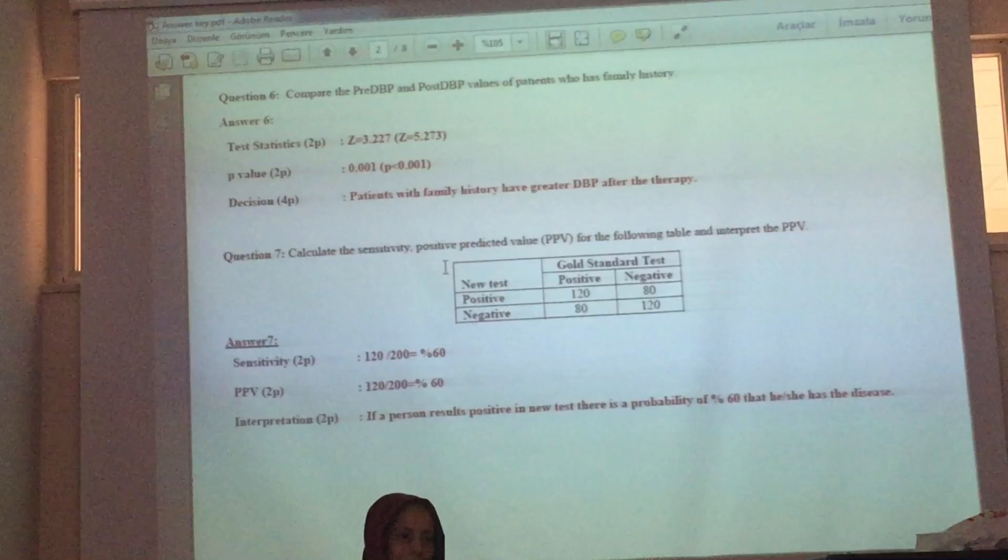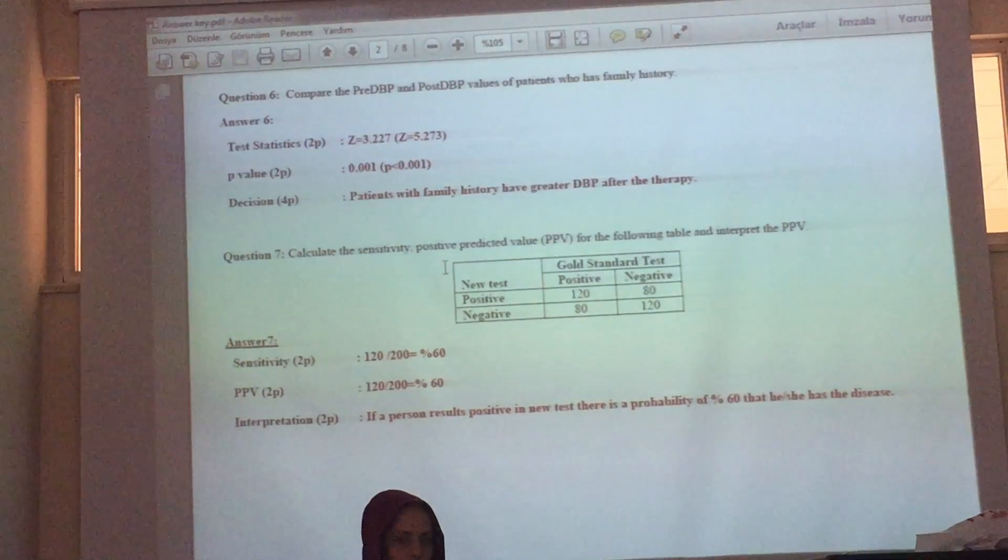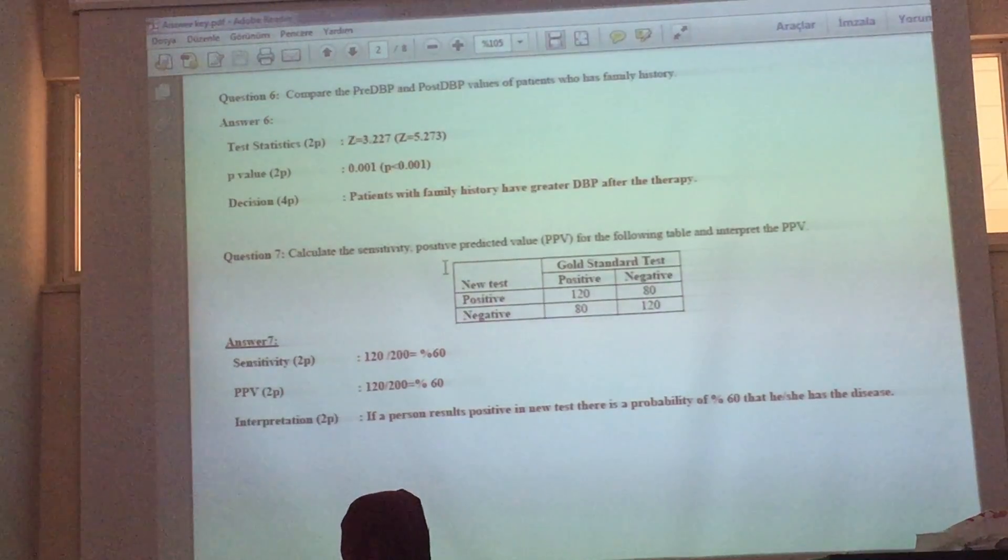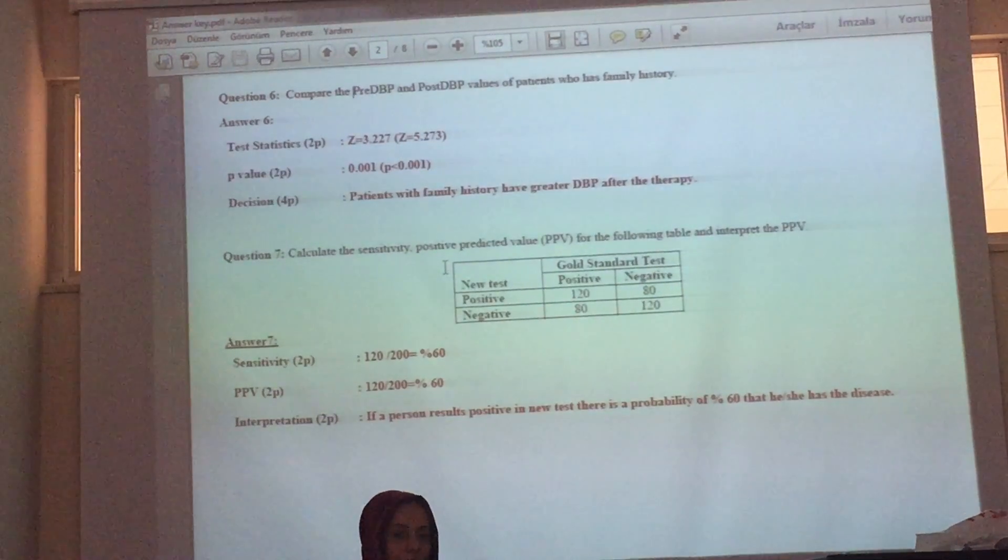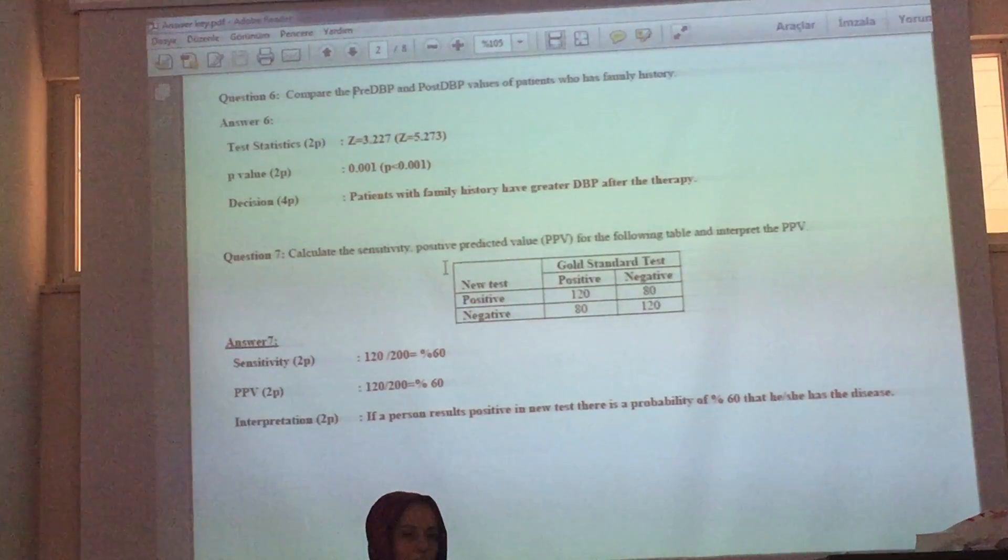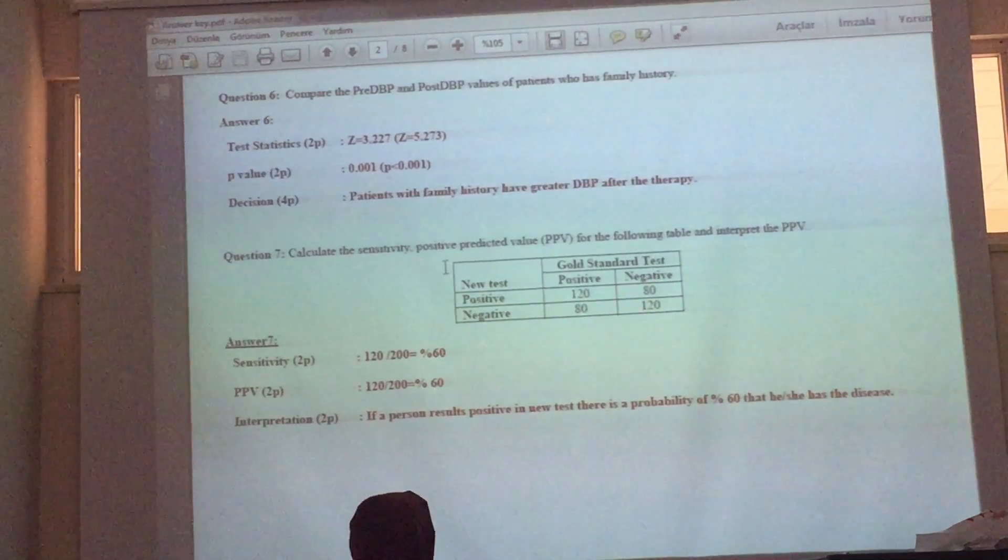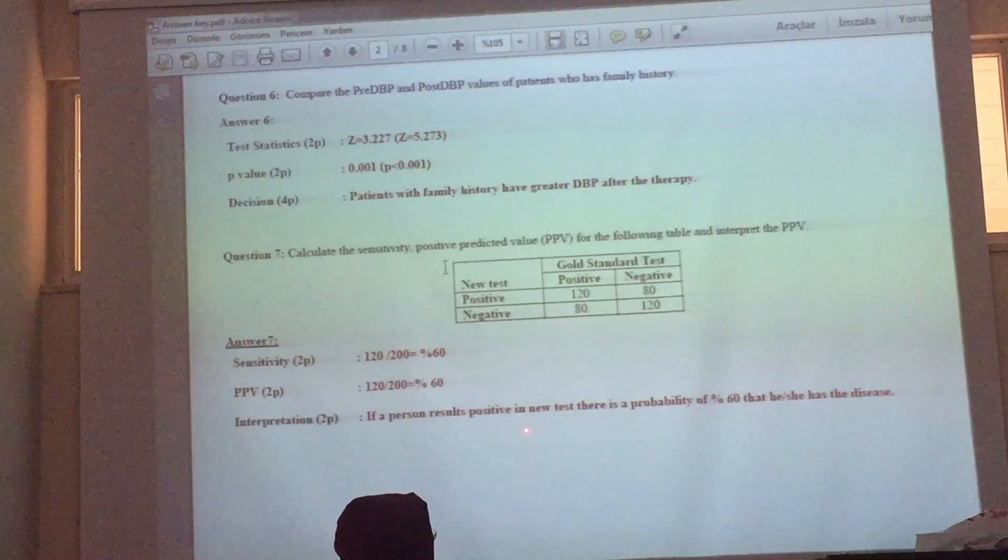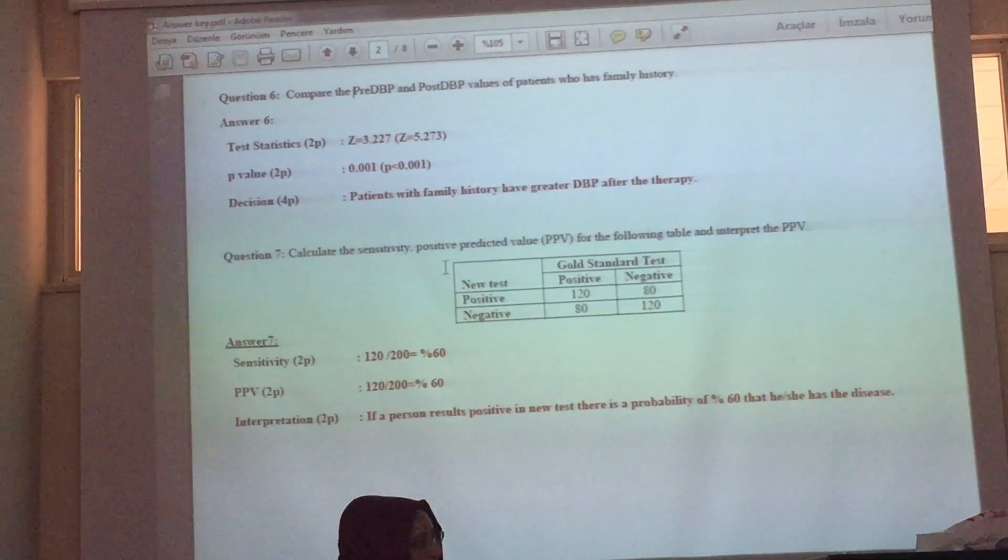In diagnostic test and drug analysis papers, you will see all of them. Positive predictive value: if people who get positive results from test, how many of them are actually patients? This over all of them. So if a person results positive in this test, there is a probability of 60% that he or she has the disease. This is the interpretation.